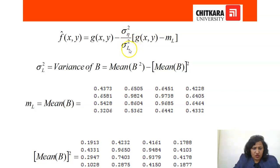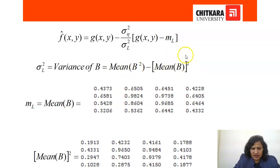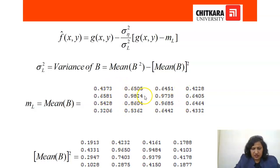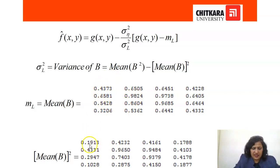The next step is to get the local variance. The formula for local variance is: mean of B squared minus the square of the mean of B. To calculate it, first find the mean of B squared — square each term: 0.4373 squared is 0.1913, 0.6505 squared is 0.4232, and in the same way square each and every pixel to get the mean of the squares.